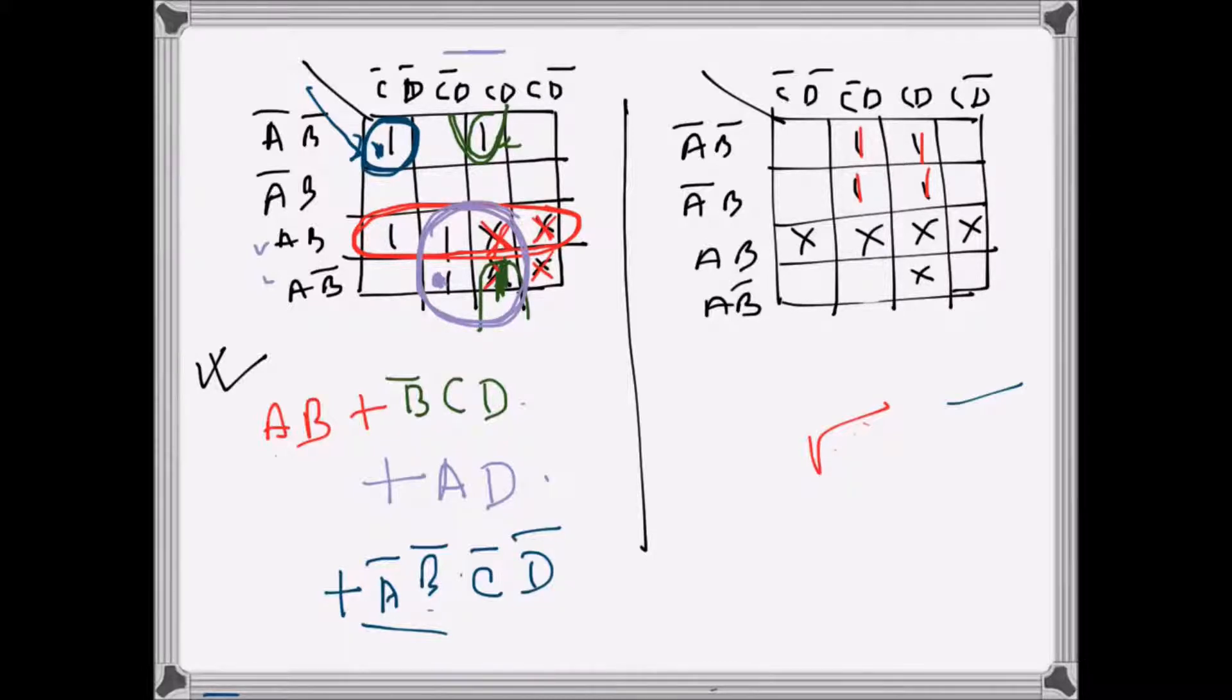If we have like that, what we can do is this group is enough there. This one and this one will be just A bar D. That will be that group. Now we can see that we can make these ones, this one, this one, this one, if all of them are one, I can have another group, a big group, but that term will be unnecessary because I have already taken all the ones there.